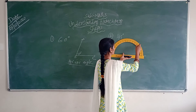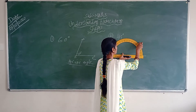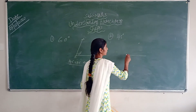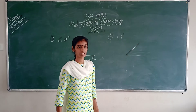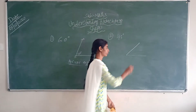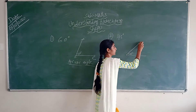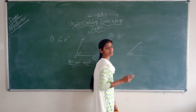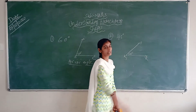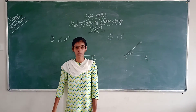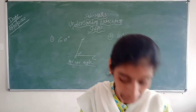So you have to mark here 45. Then like this you have to join the line. So here you have to mark 45, then you can make it as P, Q, R. This is all about the acute angle — how to measure the acute angle.